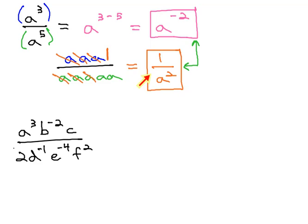So, if we come across an expression, such as this one on the bottom, a cubed, b to the negative 2, c, over 2, d to the negative 1, e to the negative 4, f squared, there are several things that need to be fixed in this expression.